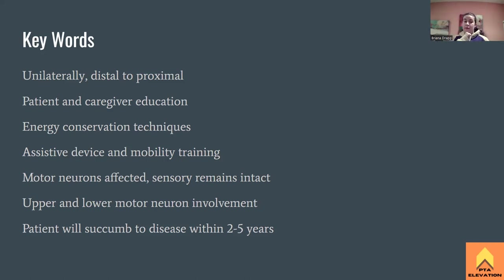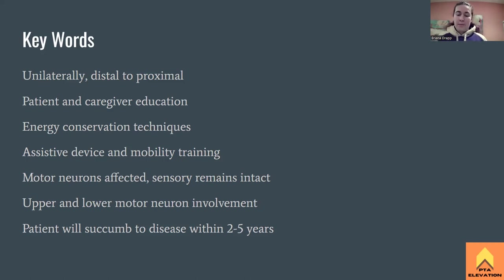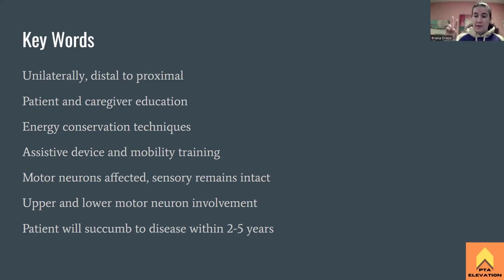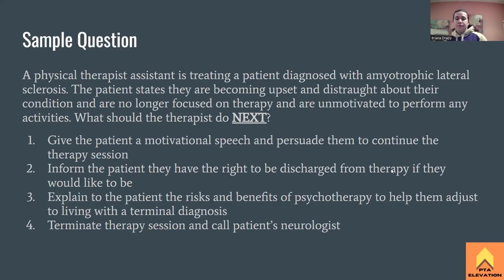On exam questions: if a patient with ALS can still walk, the right answer is an assistive device like a walker — not a Hoyer lift yet. Assistive devices and mobility training are key to maximizing independence. Motor neurons are completely affected while sensory is relatively intact. Both upper and lower motor neuron signs are present. Average life expectancy is two to five years following diagnosis — about 20% live longer, like Stephen Hawking — but most patients pass away within this range.